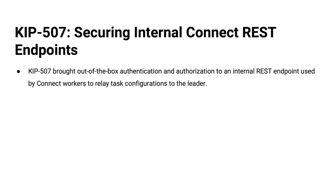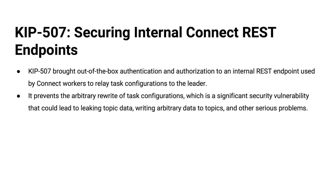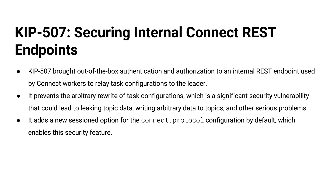KIP 507: securing the internal Connect REST endpoint. Your interface as a developer to a Connect cluster is RESTful — there's a REST endpoint on the worker where you can do GETs, POSTs, and PUTs to configure connectors, start, stop, get status, and do whatever you need. It's possible to secure that interface by adding authentication and authorization. Also, the Connect workers have their own internal REST interface they use to talk to each other — not something developers use, but Connect workers do amongst themselves. Until this KIP, that was not securable, so it was an attack surface. Now we can add authentication and authorization, make sure traffic is encrypted, and only the right Connect workers are talking to each other.